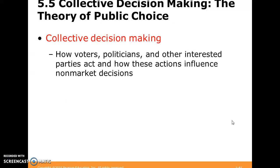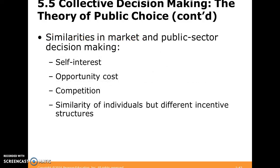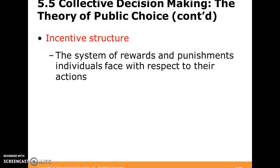Briefly talking about public choice, we want to think about collective decision-making — how voters, politicians, and other public actors think about how to influence non-market decisions. Public choice theory is the study of how collective decision-making happens. We assume that everyone interacting in these non-market processes wants to maximize their own individual well-being. Everyone is self-interested, taking into account opportunity cost, competition, and incentive structures — the system of rewards or punishments faced after an action.